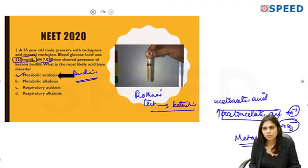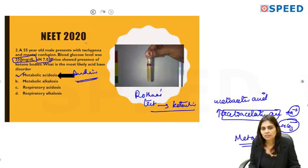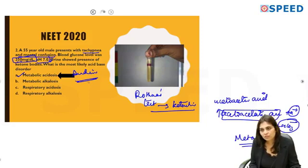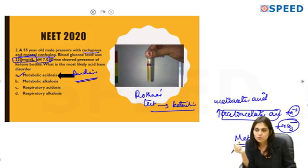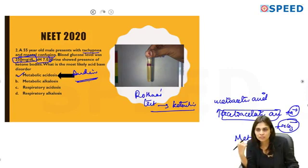Some students answered respiratory acidosis, likely distracted by the mention of tachypnea and mental confusion. However, tachypnea is actually the effect of metabolic acidosis — hydrogen ions enter the CSF, stimulating the respiratory center, causing the person to hyperventilate. This Kussmaul's breathing is a compensatory step performed by the respiratory system in response to metabolic acidosis.